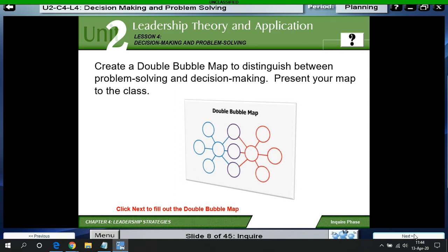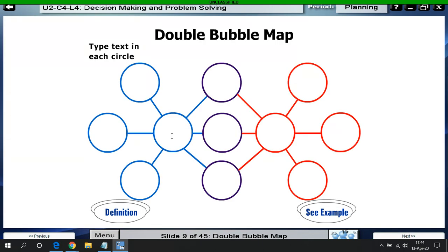This is a double bubble map, which is used to compare and contrast between problem-solving and decision-making. What you would do here is somewhere in here you would put how they are alike, and then out here you put how they are different. You can pause and do that on your own, and then just resume when you're ready to move on.